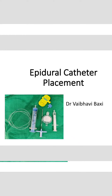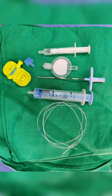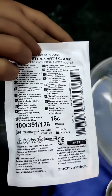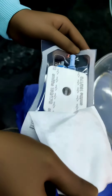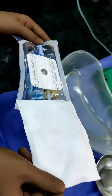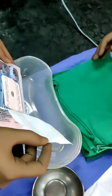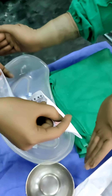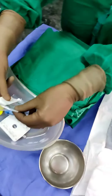Epidural anesthesia is a type of central neuraxial block where we inject local anesthetic drugs with or without some adjuvant analgesic drugs through the epidural catheter or the Tuohy needle into the epidural space to provide analgesia for post-surgical patients, for labor patients, and even for anesthesia for surgical procedures.